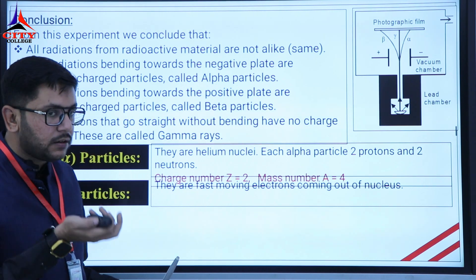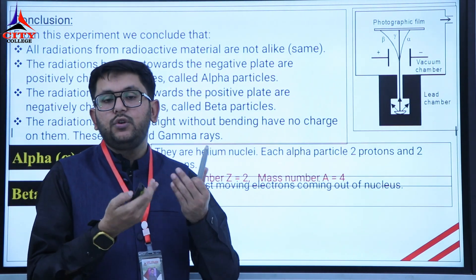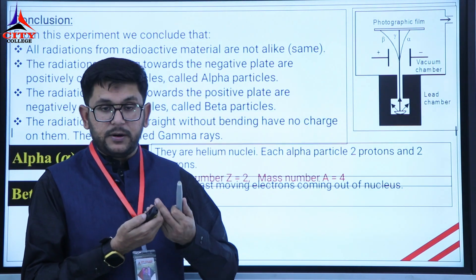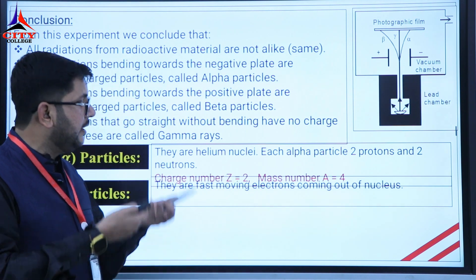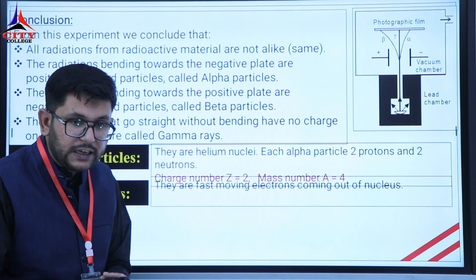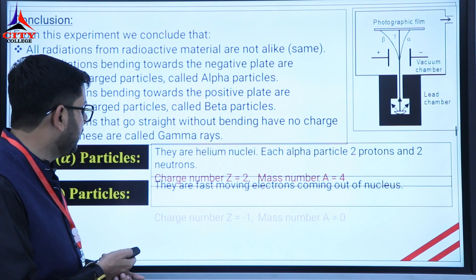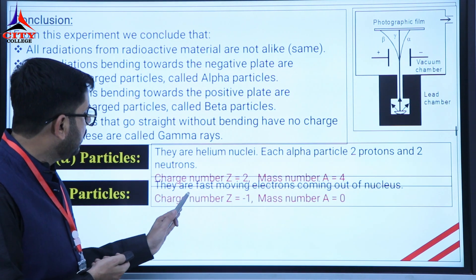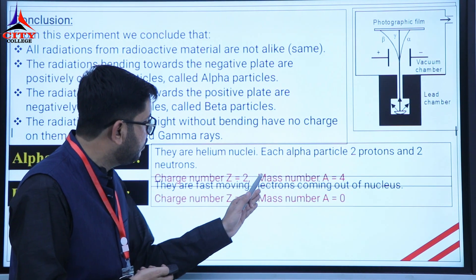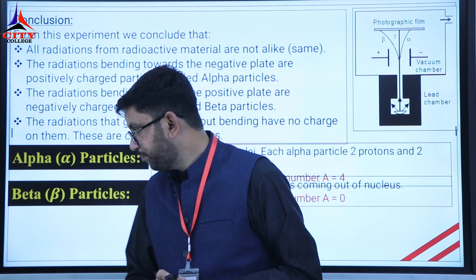Students often get confused here, asking: if electrons revolve outside the nucleus in orbits, how can fast-moving electrons be emitted from the nucleus? We will clarify this point further. The charge number of beta is minus 1 and the mass number is considered to be 0.